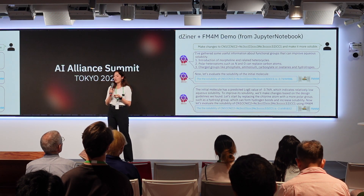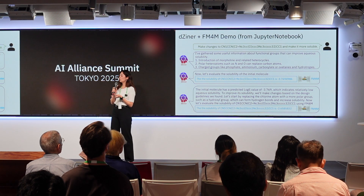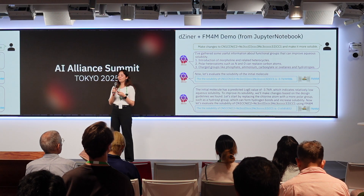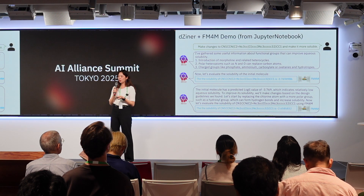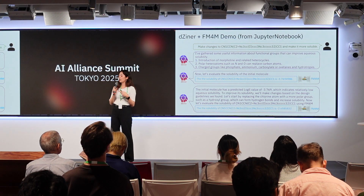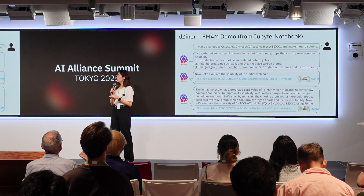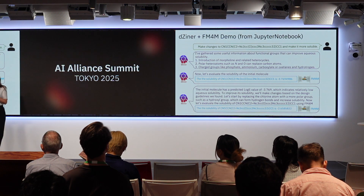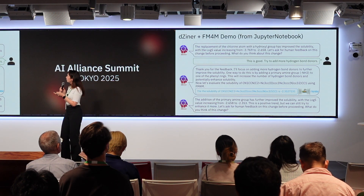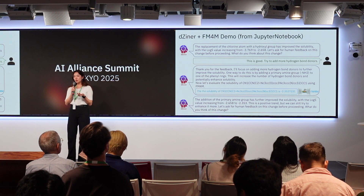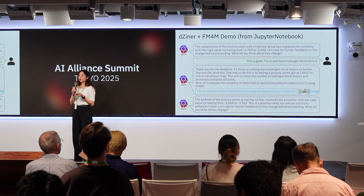For example, the user says: make changes to molecule XXX and make it more soluble. Designer first gives information on how you can make a molecule more soluble, then returns the solubility value of the initial molecule — predicted by FM4M. It explains how it can change the molecule to make it more soluble: in this case, the chlorine part was changed to an oxygen atom, reducing the solubility value from negative 3.7 to negative 2.6. It then goes back to the user asking if this is okay or if they want to make other changes.